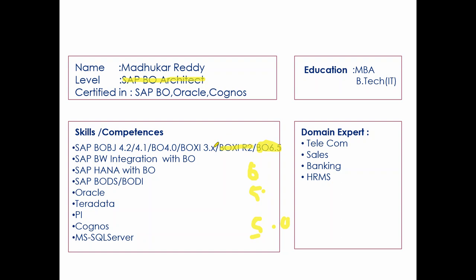Later, BO came up with XI 3.0, and then 3.1 was released. In 2008, SAP acquired the Business Objects tool and they added new features to the existing 3.1 version, and also introduced new tools in version 4.0, which is called SAP BO 4.0.